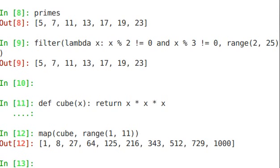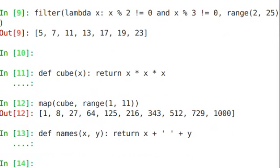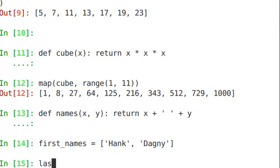Now, you don't need to just pass one variable. Our cube function here could have been something different, and it could have taken multiple variables. So let's call this names, return x plus space plus y. And let's make a list. First names equals Hank, Dagny. Last names equals Reardon, Taggart.